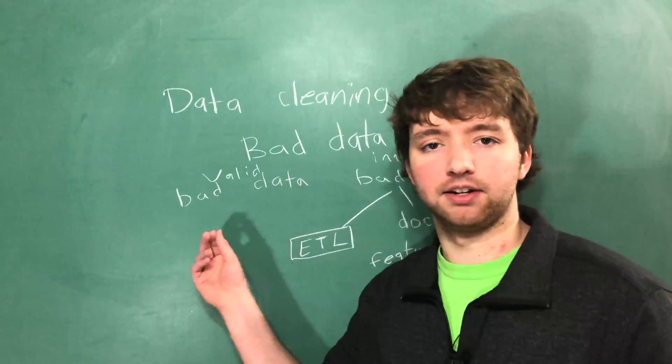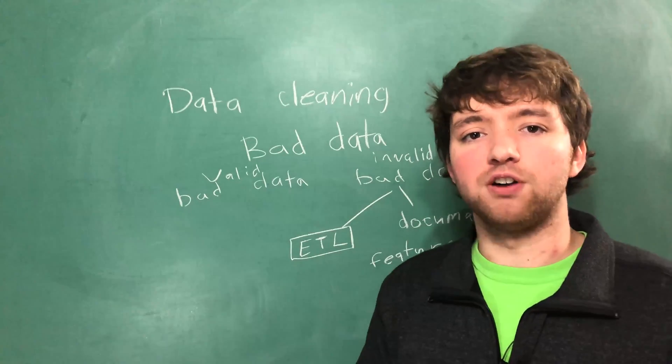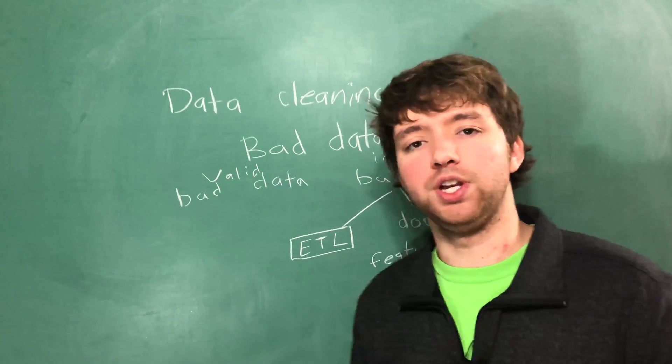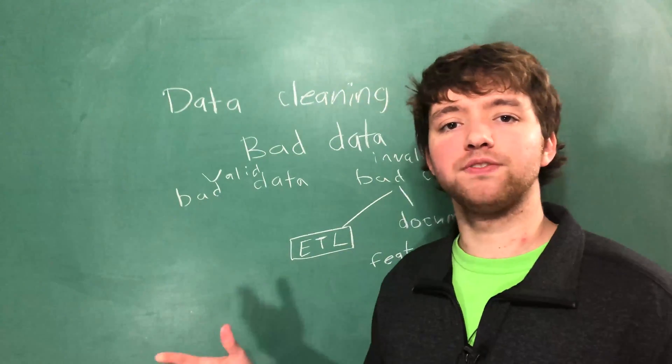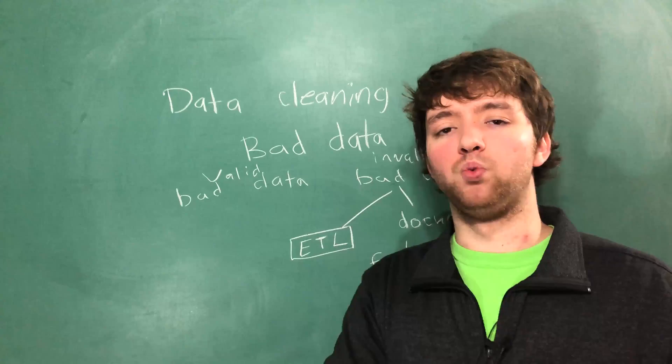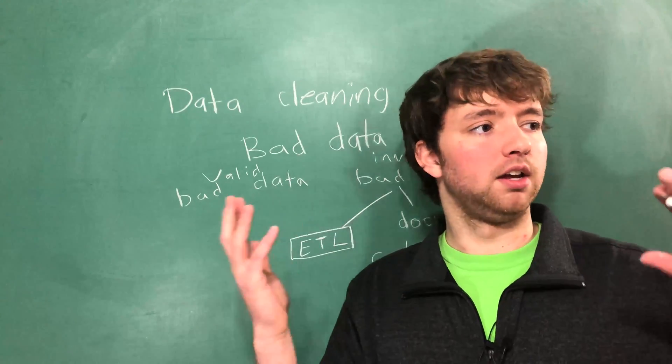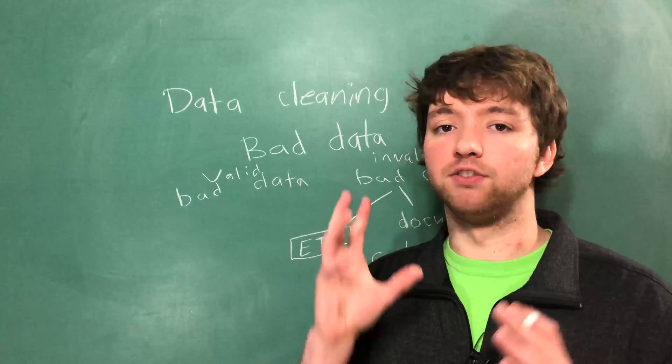Then there's valid bad data. This is the hard stuff. So this is when the data itself is kind of crappy but there was no issue in how we process the data. Just the data is crappy. Examples of this is we might get data from two different sources and one source has extra features than the other source. So when you combine them we have a lot of nulls.